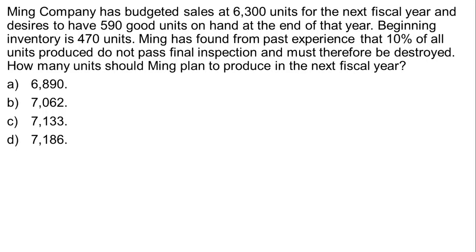Okay, here we have a simple inventory related question, but it's not so simple because there's actually two steps to it. Ming Company has budgeted its sales at 6,300 units for the next fiscal year and desires to have 590 good units on hand at the end of that year. Beginning inventory is 470 units. Ming has found from past experience that 10% of all units produced do not pass final inspection and must therefore be destroyed. How many units should Ming plan to produce in the next fiscal year?